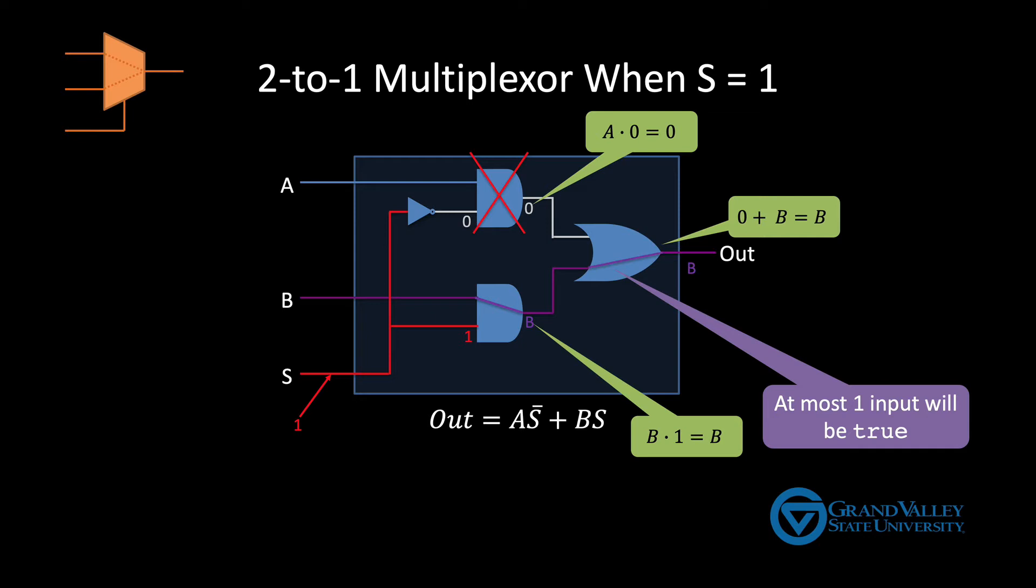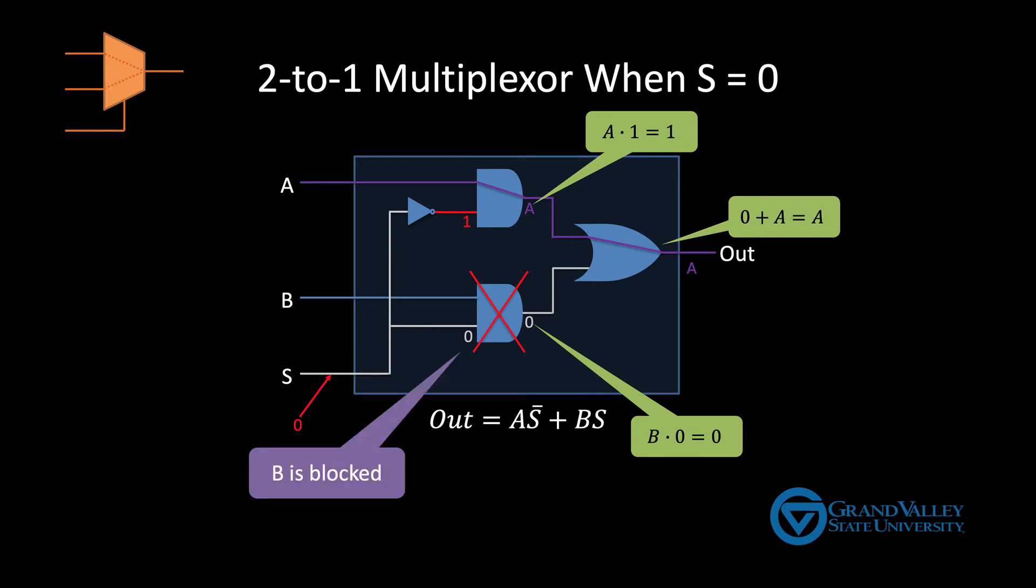Now if we change the selector input to 0, we can see that B is blocked by the AND gate, and A is passed on through to the output.